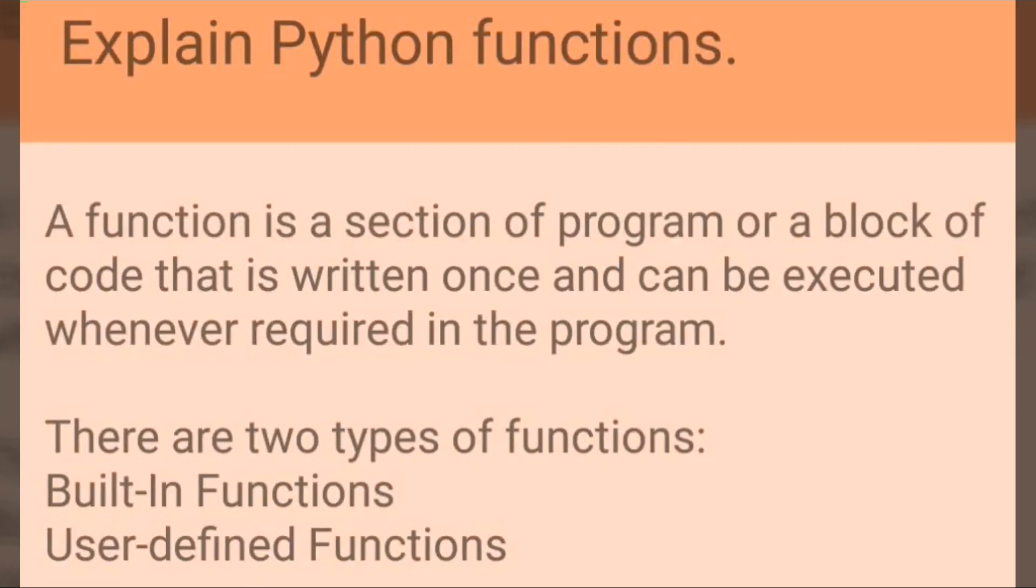Explain Python functions. A function is a section of program or a block of code that is written once and can be executed whenever is required in the program. There are 2 types of functions: Built-in functions and user-defined functions.